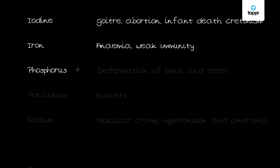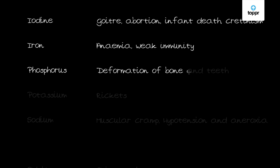Next is phosphorus. Phosphorus is an important structural component of bones and is also found in DNA and RNA. It is essential in energy transfer, being found in NADP, and in energy storage such as in ATP. It also maintains normal blood pH. The deficiency of phosphorus causes deformation of bones and teeth.